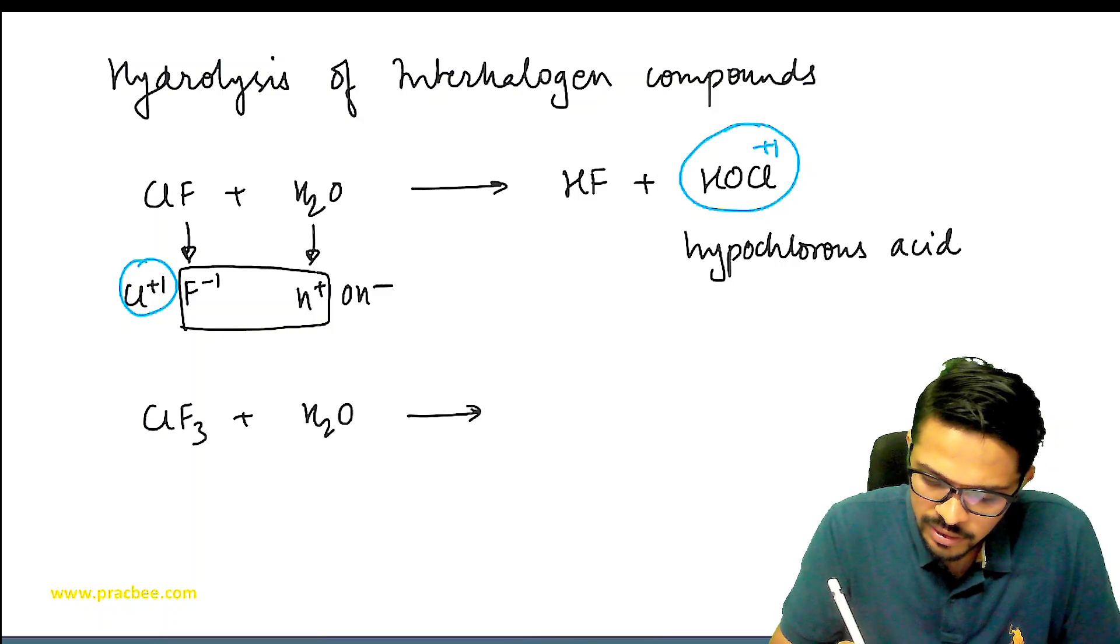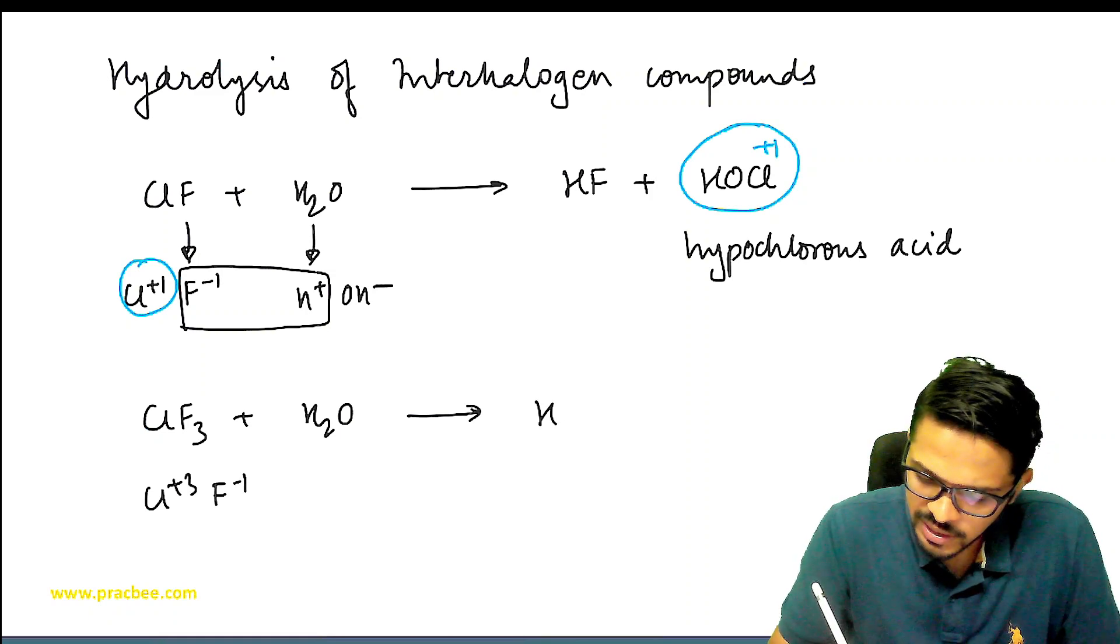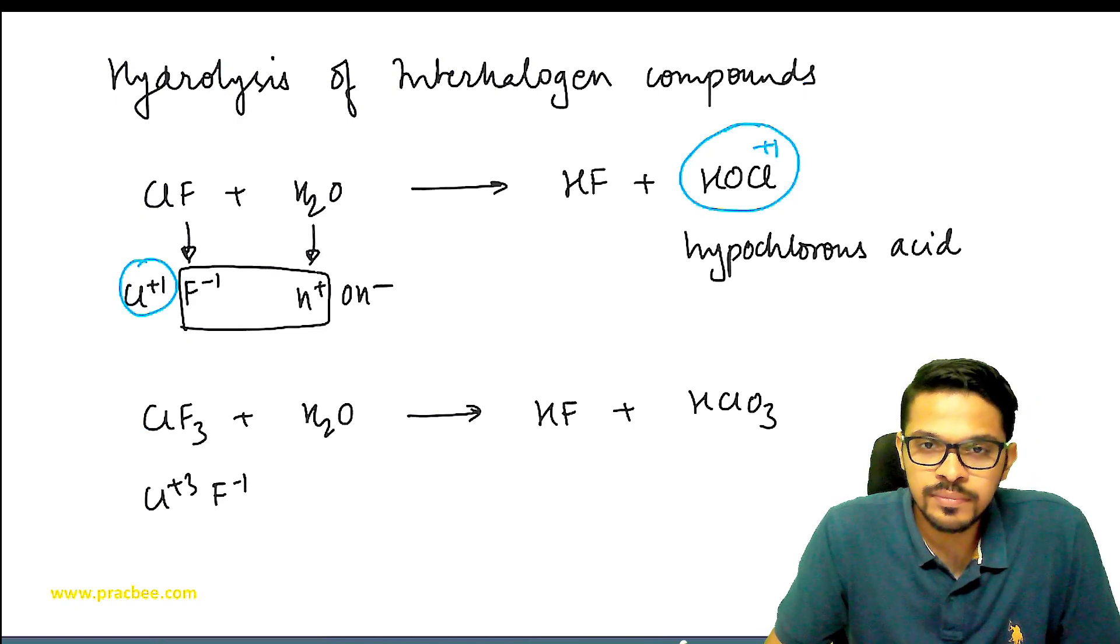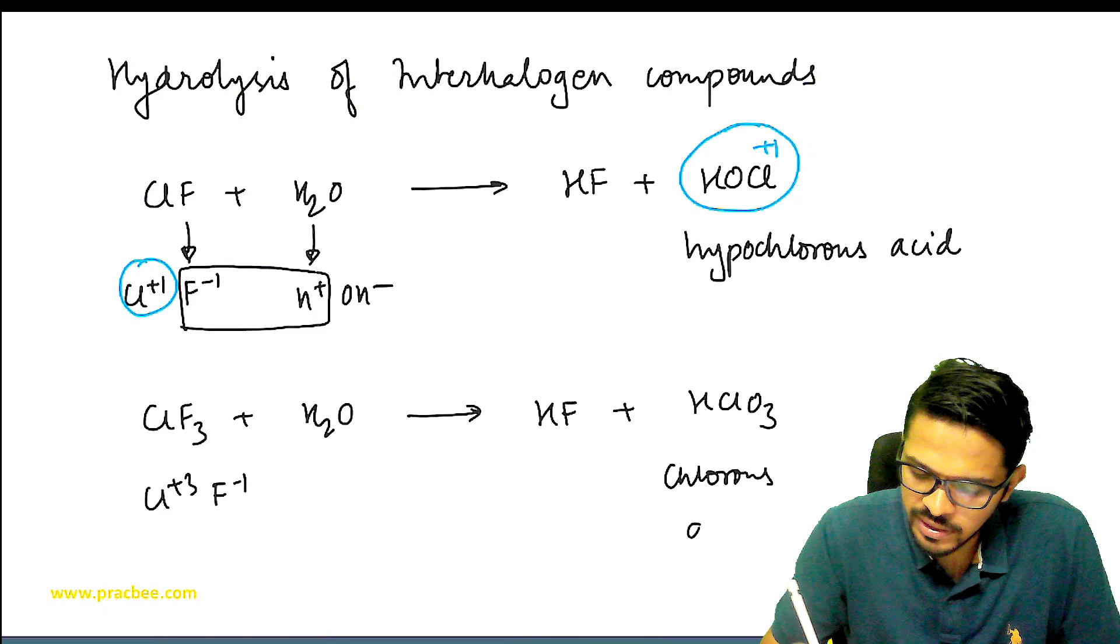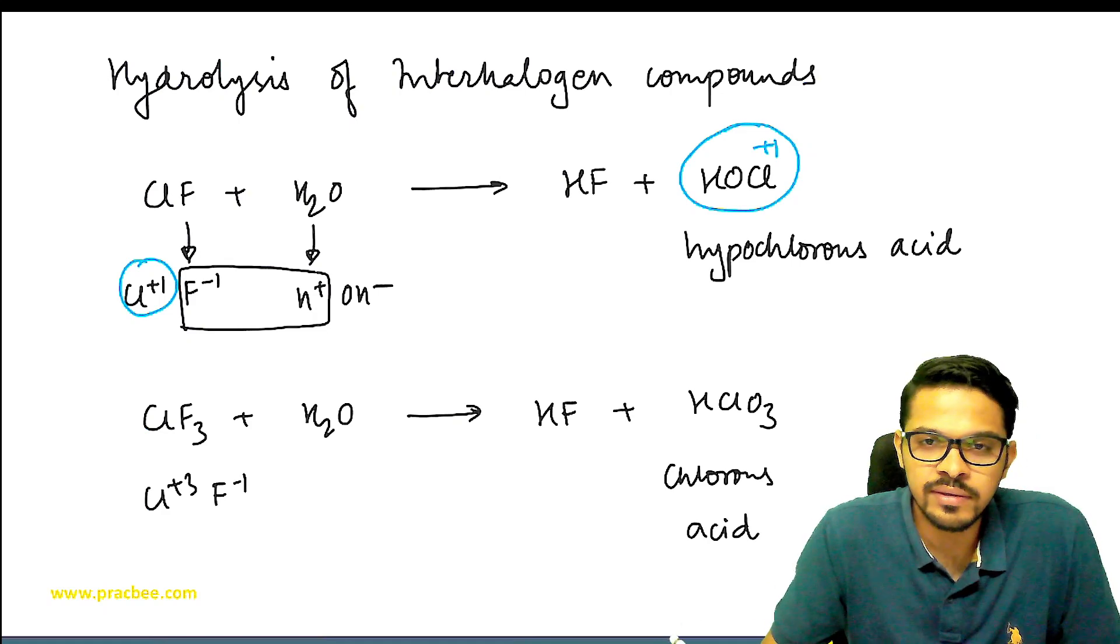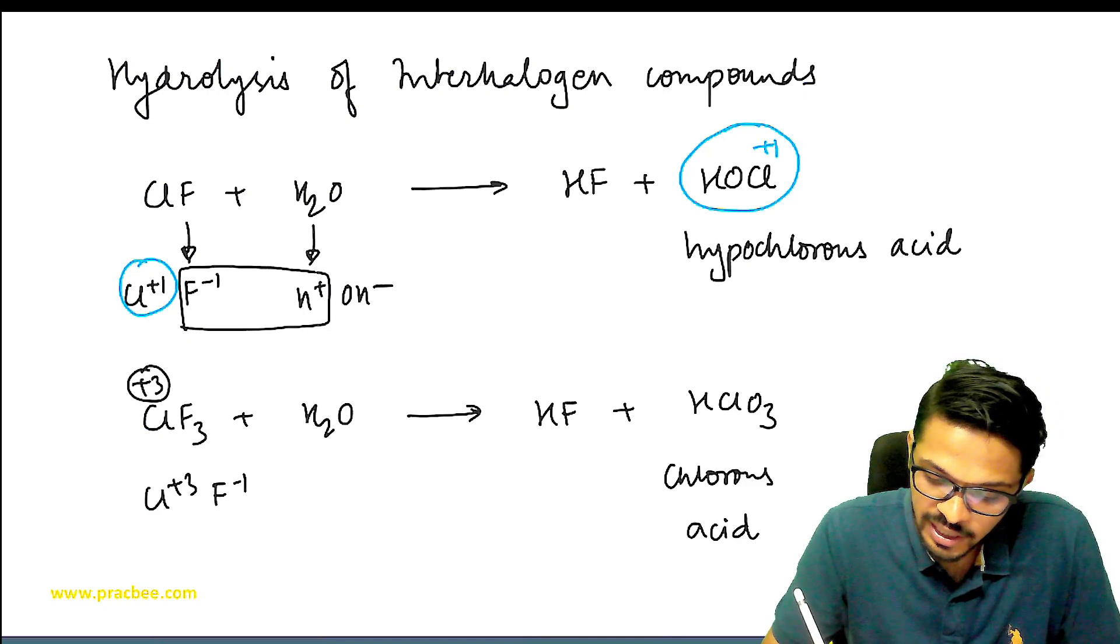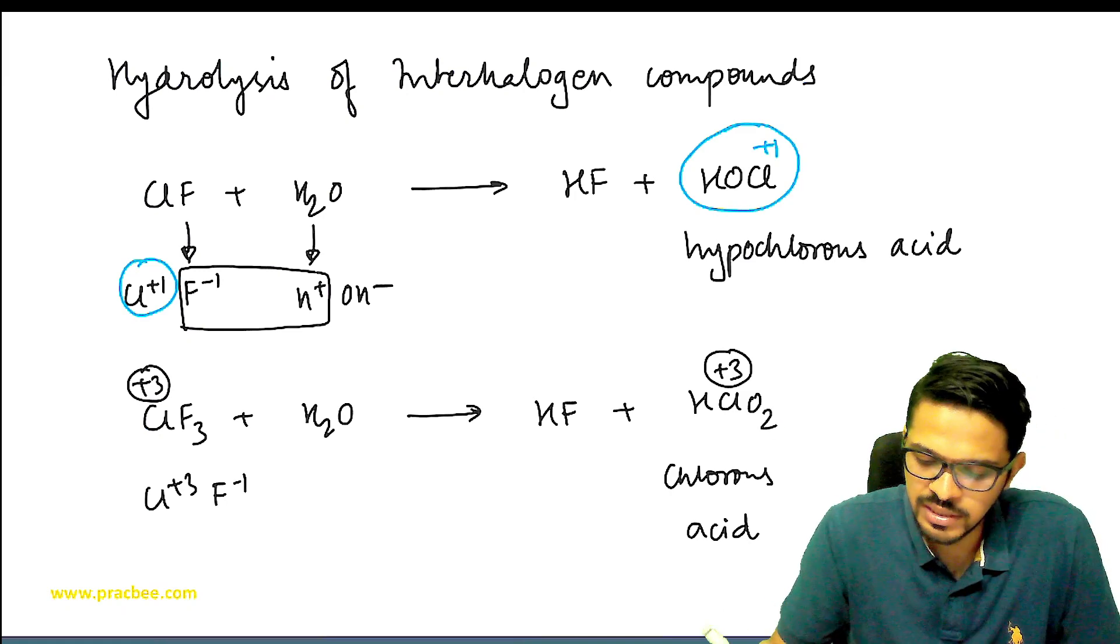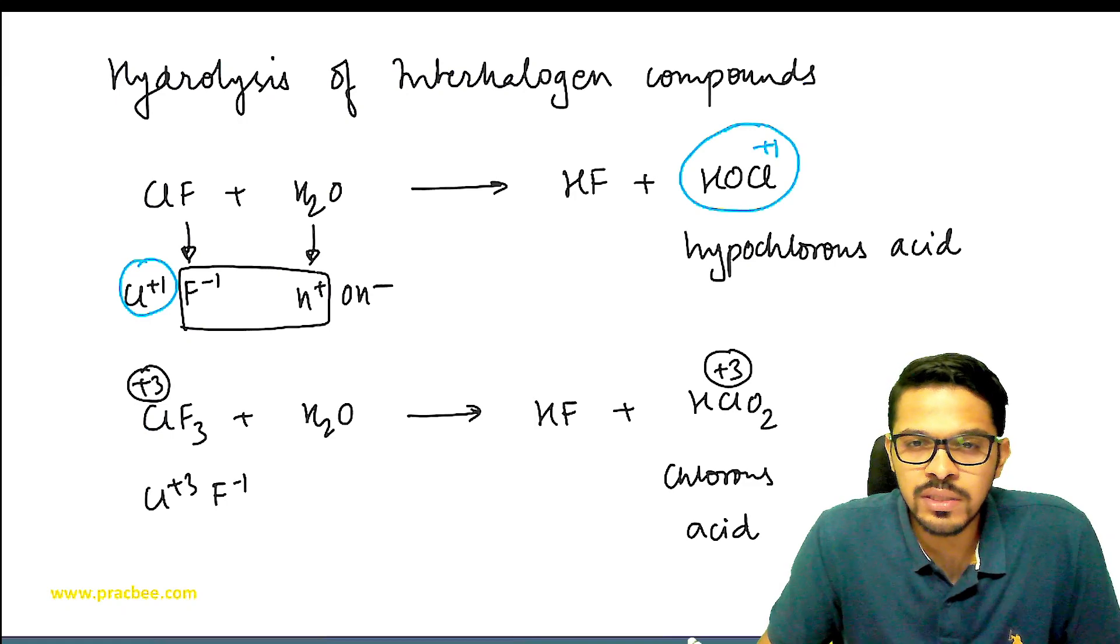Next, let's take ClF3 in water. Cl has +3 and F has -1, so again HF will form. Along with that, what will form? We need +3 oxidation state for chlorine. Initially I might write HClO3, but that's +5. So I should make HClO2. This is chlorous acid.